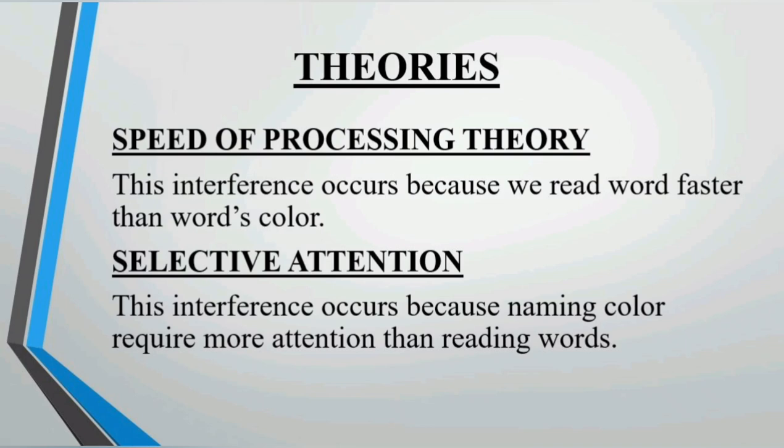The second theory is the selective attention. Here is the interference. Because the naming of the color requires more attention than word reading. Because our upbringing from the start is the same. We have to read out words. If you are reading text, you don't read it with any color. We keep our reading in the flow.